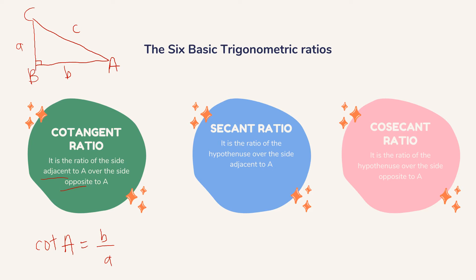Next, we have our secant ratio. It is the ratio of the hypotenuse over the side adjacent to A. So secant A is equal to c over b. And last, we have our cosecant ratio. It is the ratio of the hypotenuse over the side opposite to A. So cosecant A is equal to c over a.